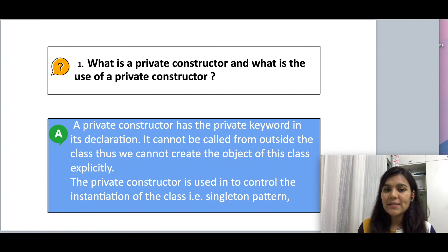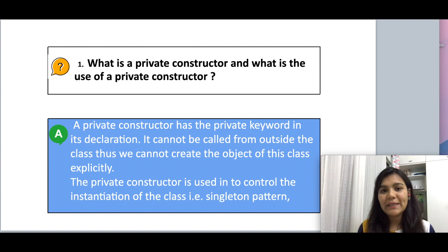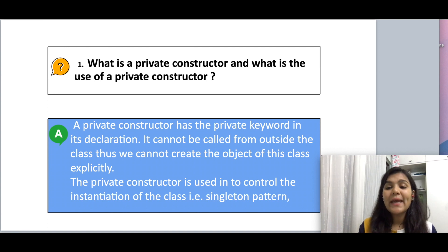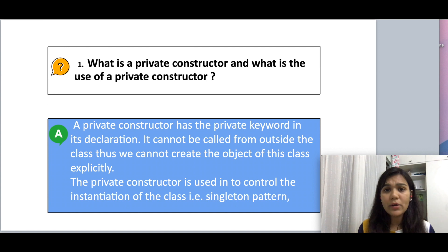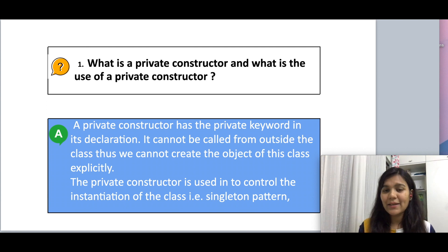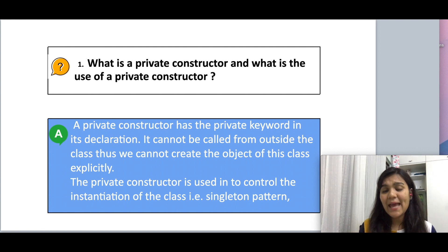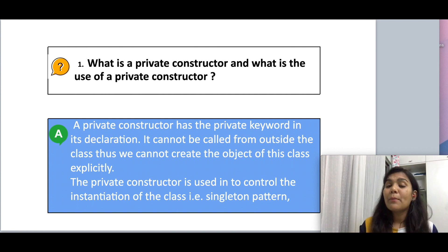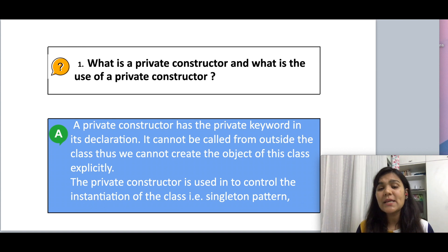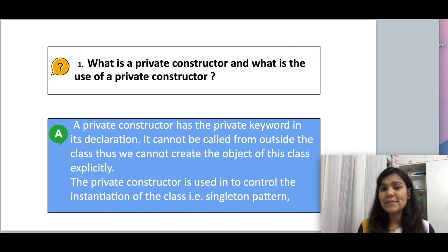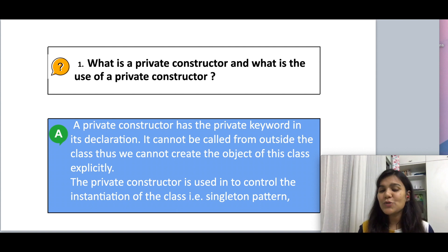What is a private constructor and what is the use of a private constructor? A private constructor has the private keyword in its declaration. It cannot be called from outside the class, and thus we cannot create objects of this class explicitly. Usually we put a public keyword on a constructor because we want to create objects explicitly. But if we add the private keyword — not just to a constructor, but to methods and variables — it means we cannot access these from outside the class, only within the class. The same applies to a private constructor.